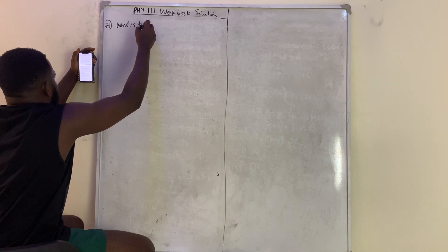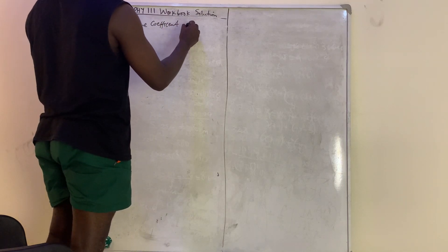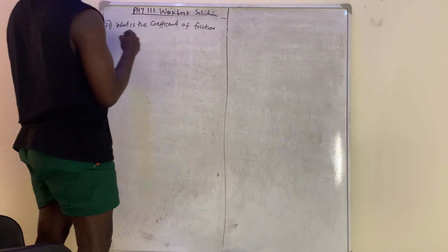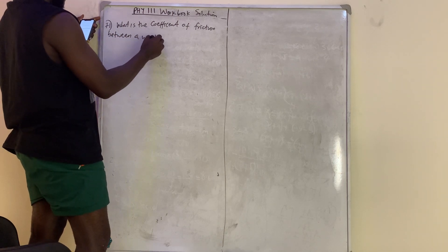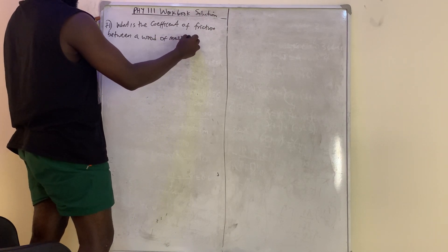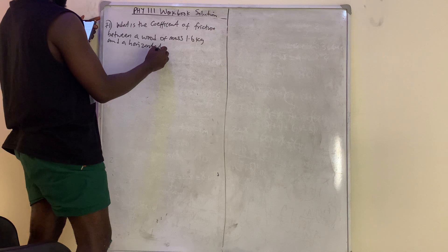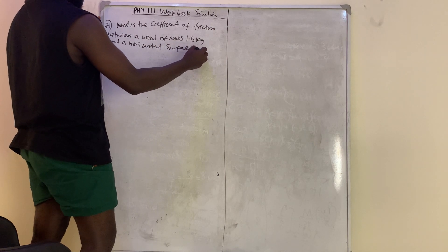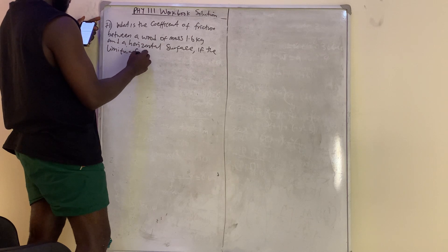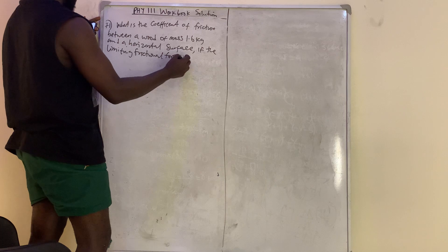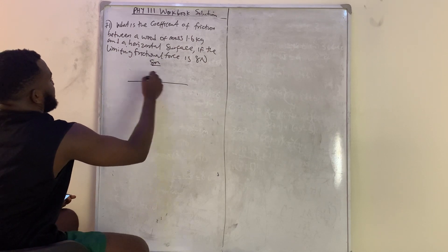Question number 71 asks: what is the coefficient of friction between a wood of mass 1.6 kg and a horizontal surface, if the limiting frictional force is 8 Newtons?